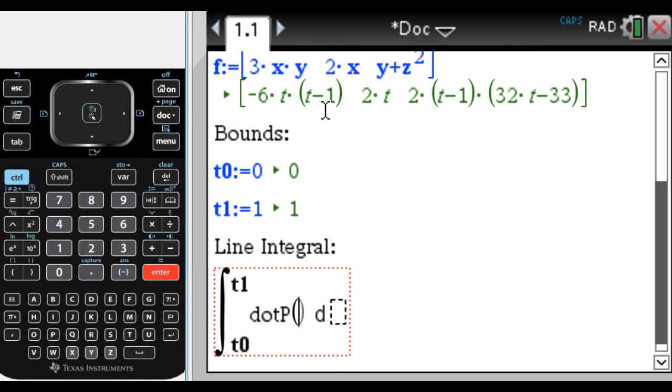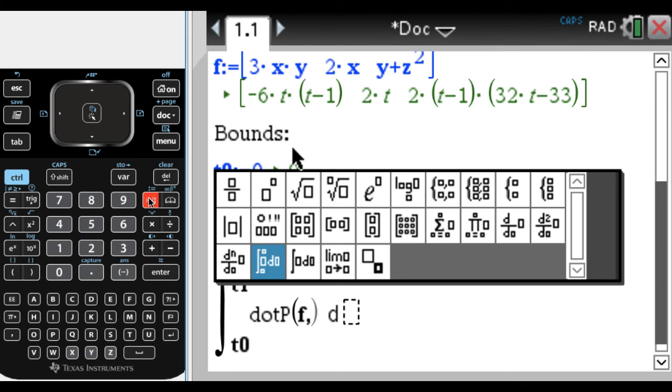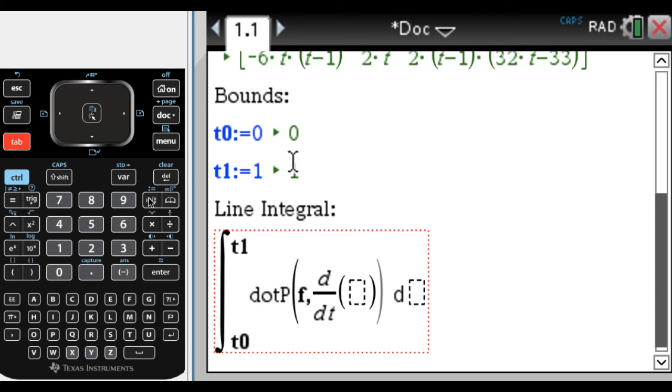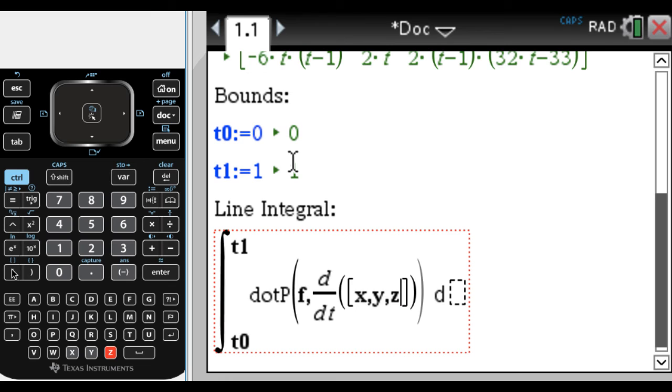Okay, so it's the dot product of F and R prime, right? So R is our path. So what I want to do, I need the derivative, so the derivative with respect to T, of, so it's going to be a vector, and we're just going to type in what R is. So R is whatever X is, whatever Y is, whatever Z is, and then I want this whole integral with respect to T.